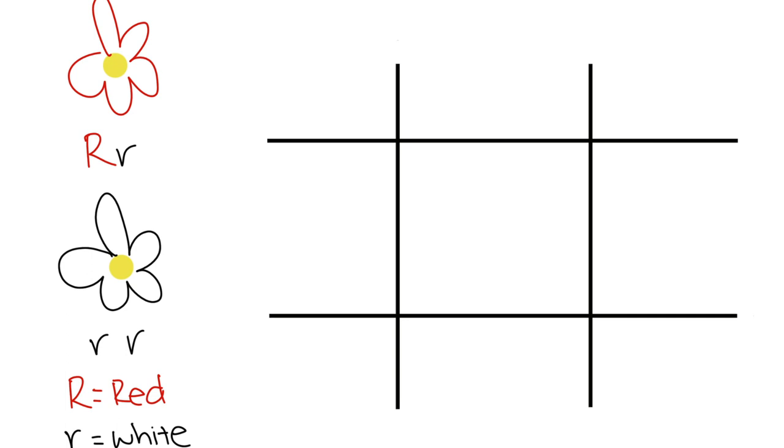On the left, you can see the parent's genes, a heterozygous and a homozygous recessive. Now, we want you to set up the Punnett square practice problem. Pause the video now and press play once you have completed your square.